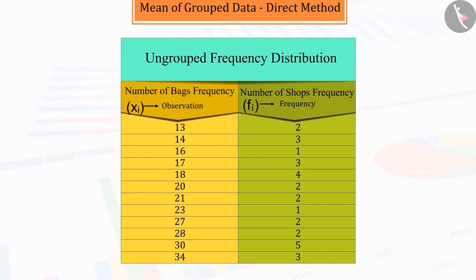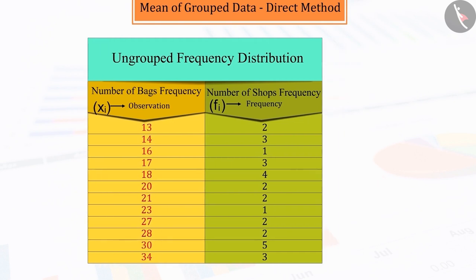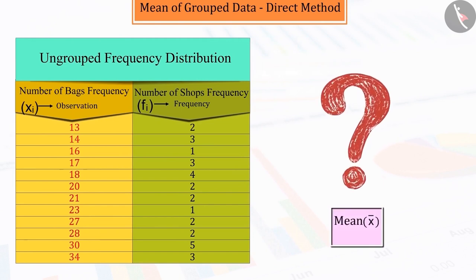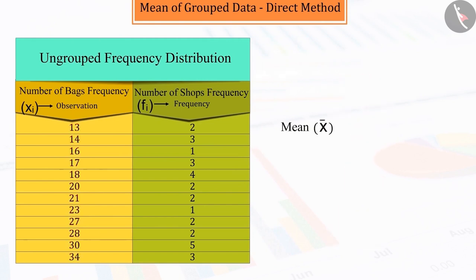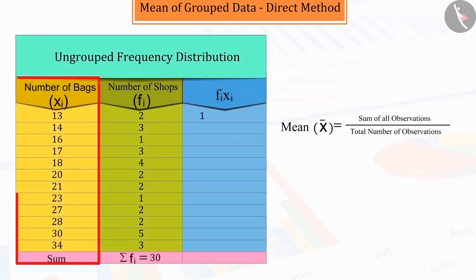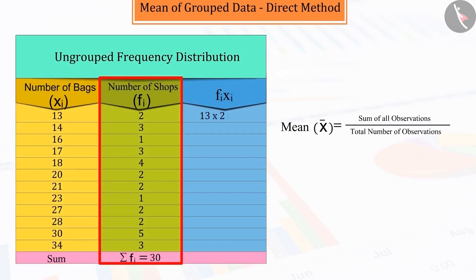If you are asked to find the mean of this data from these ungrouped data, will you be able to find it? To find the mean, divide the sum of observations by the number of observations. That is, multiply each observation, xi, by its corresponding frequency, fi.